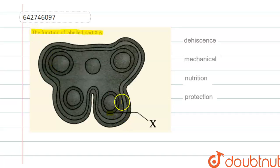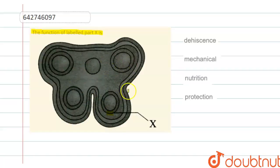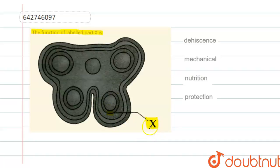The question is: what is the function of labeled part X? Here is the diagram of a mature anther. There are four microsporangia present inside the anther, and X is a part of it — the outermost layer of these four microsporangia. We have to identify what X is and what its main function is.